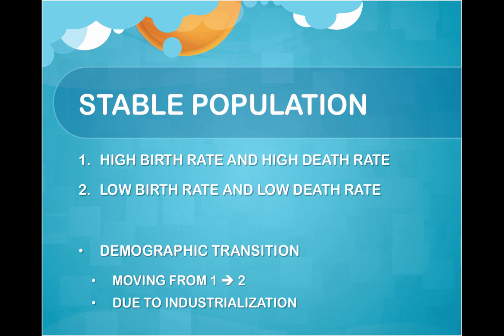A stable population can be achieved by high birth rate and high death rate, or low birth rate and low death rate. Usually, in unindustrialized countries, you have a high birth rate and a high death rate. As a country becomes more industrialized, you get a lower birth rate and a lower death rate. Demographic transition is moving from the first to the second.